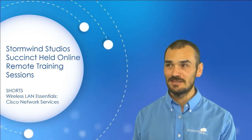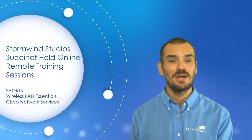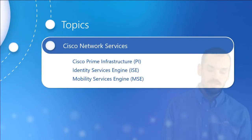So what does that mean? What does Cisco actually provide to us in terms of network services on the Wireless LAN? Well, this is what we're going to talk about: Cisco Prime Infrastructure, the Identity Services Engine Integration, and the Mobility Services Engine. Some of these we've kind of danced around in earlier shorts, but now we actually want to dance with them as opposed to dancing around them.